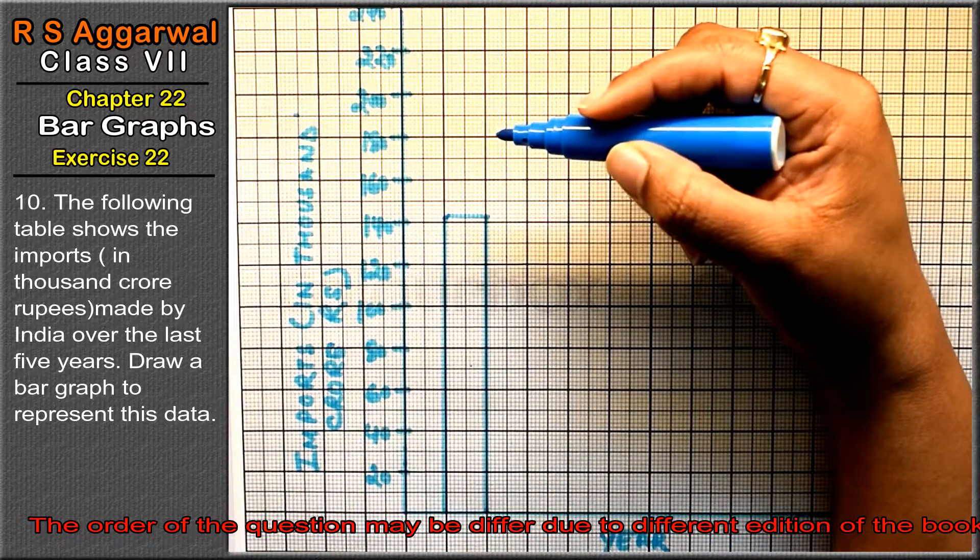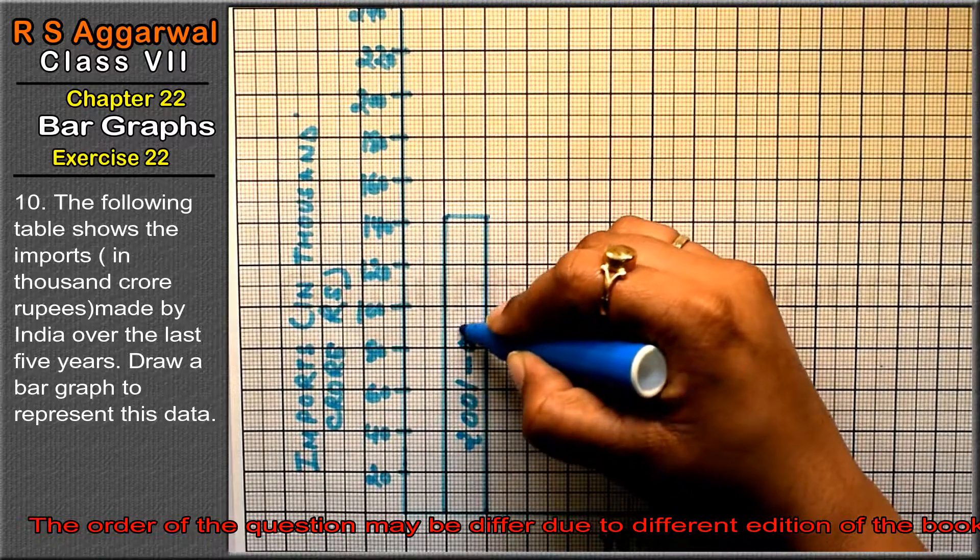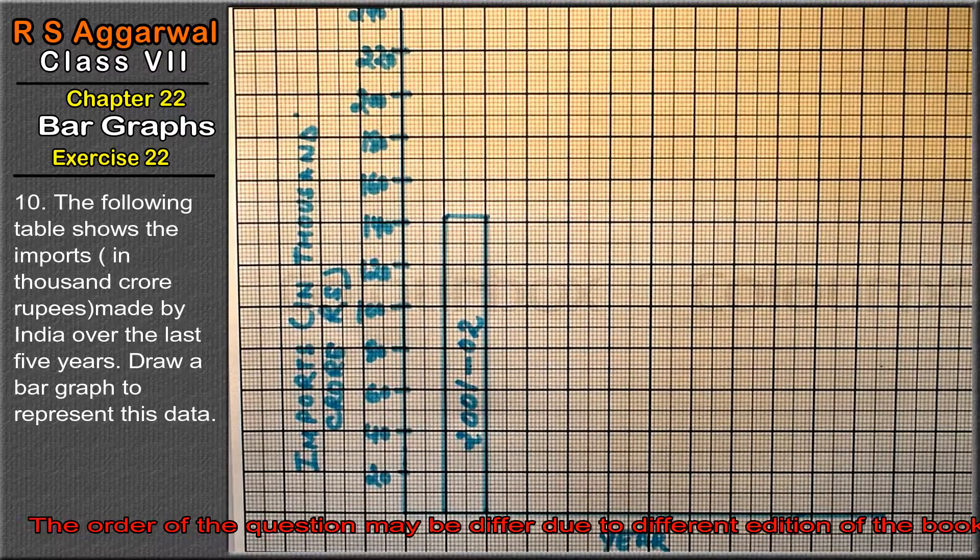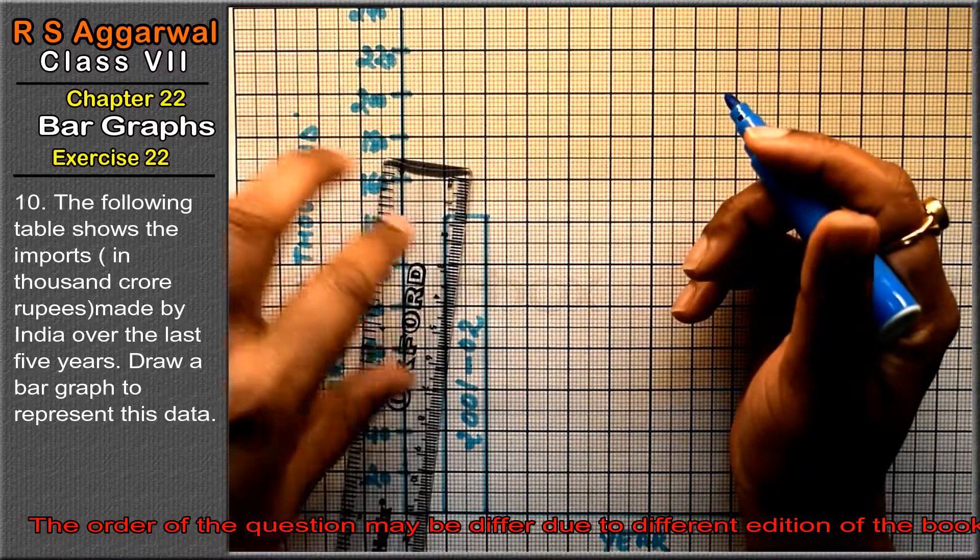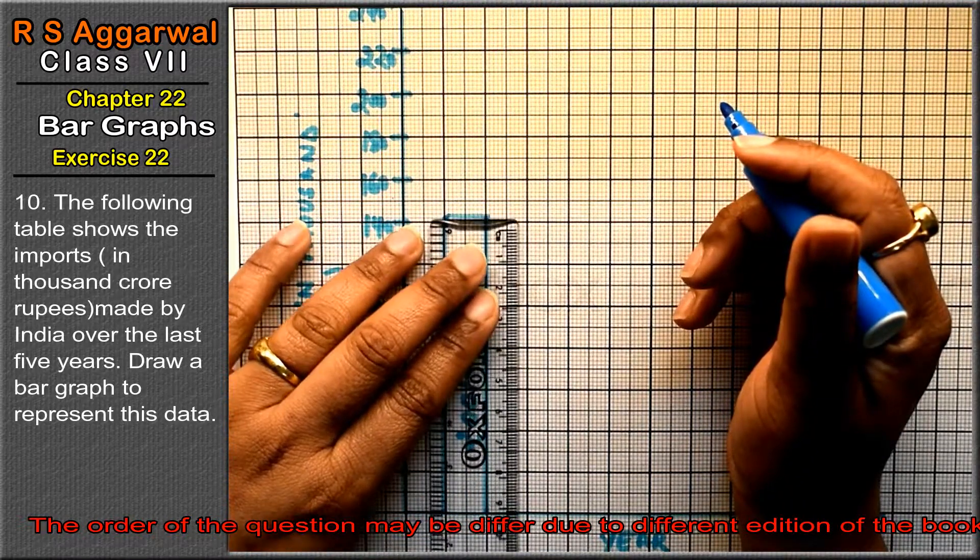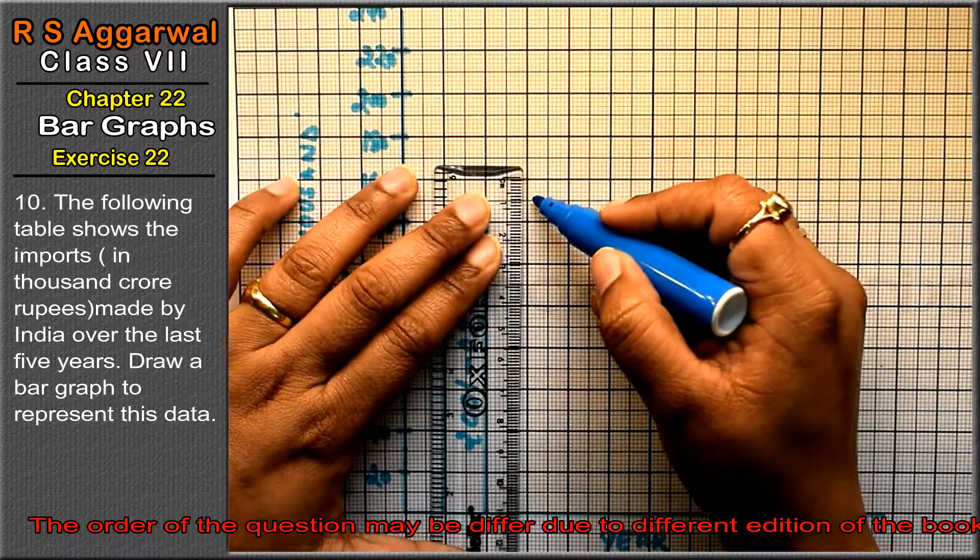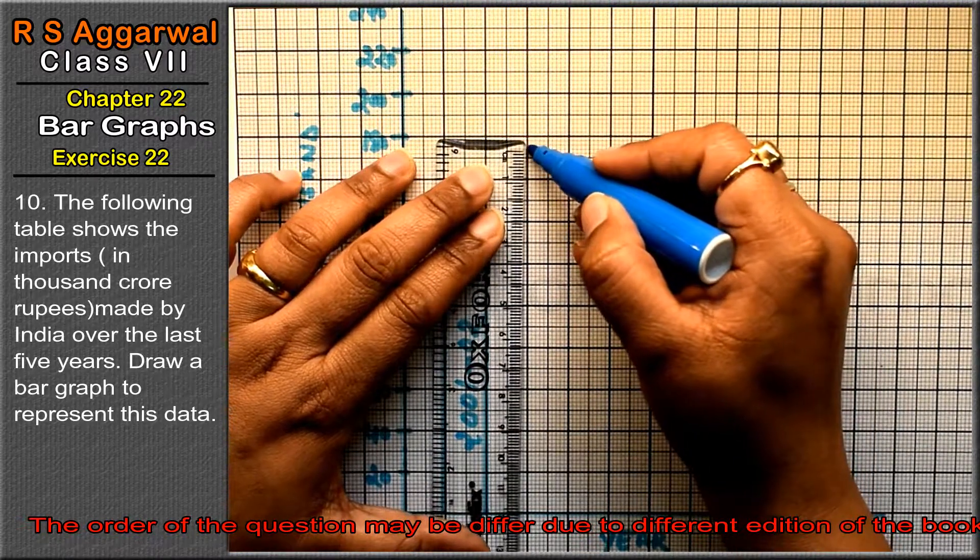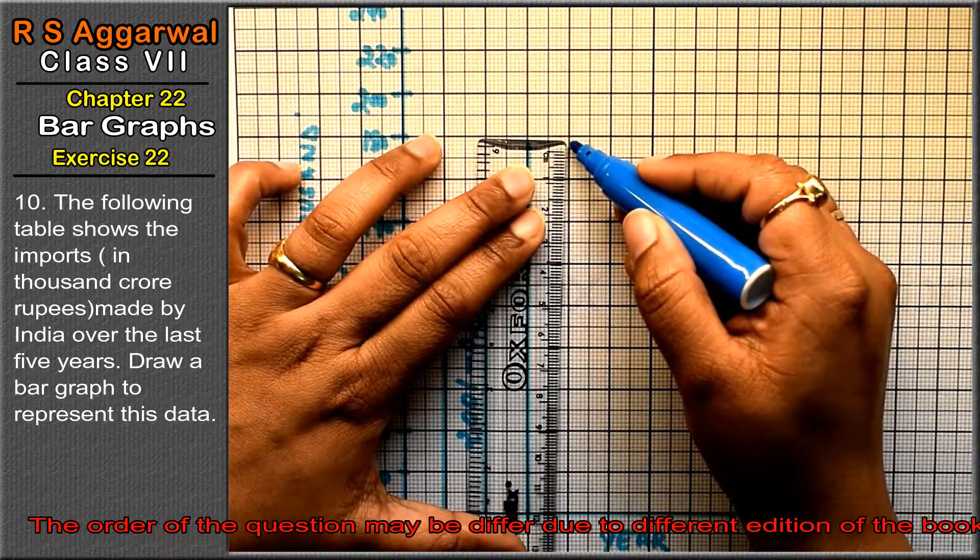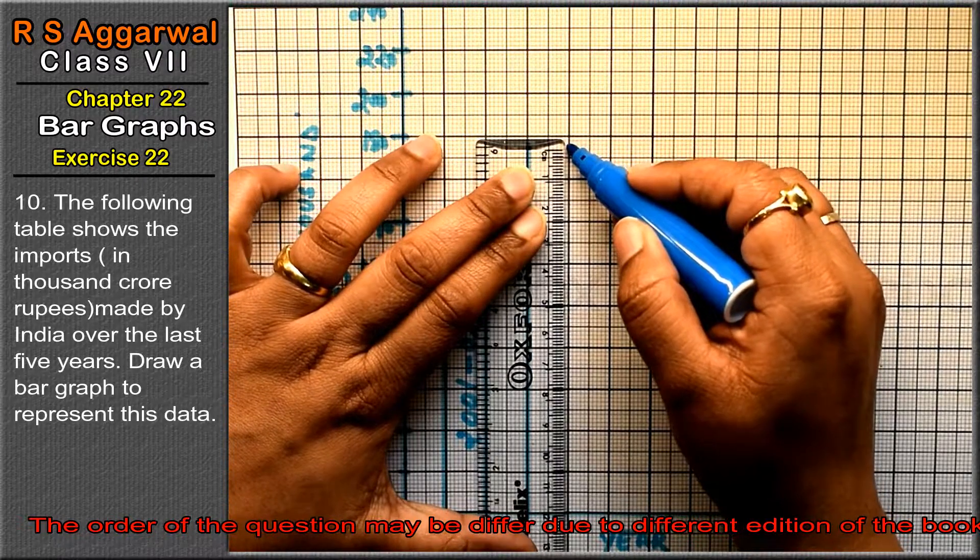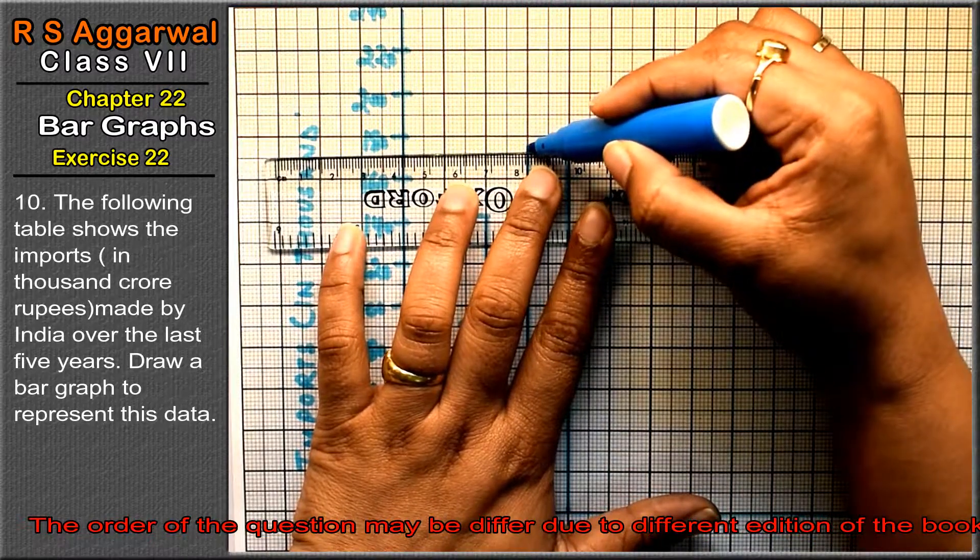This is 2001-02. Next is 2002-03 at 176, which needs 88 blocks. We count the divisions and mark the bar for 2002-03.